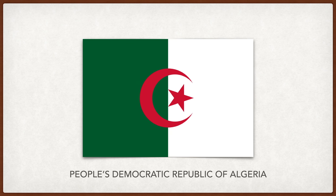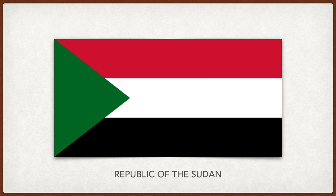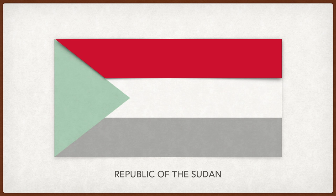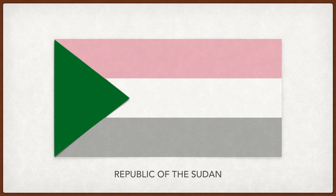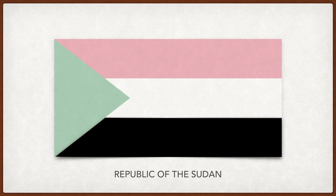Algeria. Green and the crescent and star represent Islam, while white represents peace. Sudan. The red, white, black, and green together represent Arab unity, while red specifically for Sudan represents blood spilt for independence. White represents peace, green represents Islam, and black represents Sudan — and Sudan means 'black' in Arabic.